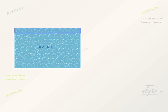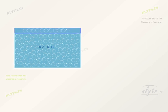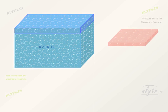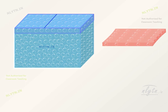Therefore, the surface of a fluid is a little stretched, which can be considered similar to a stretched membrane or a rubber sheet. So any such section of the surface of fluid is pulling the other. This force per unit length on the surface is called the surface tension and has the units of Newton per meter.